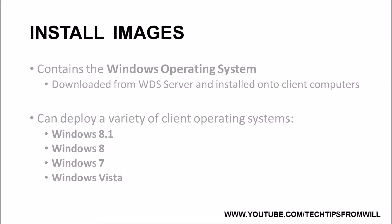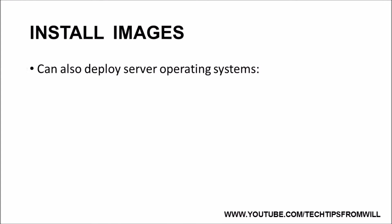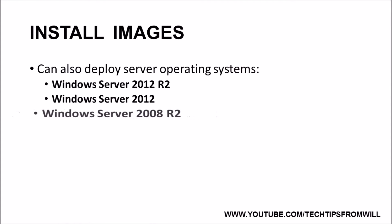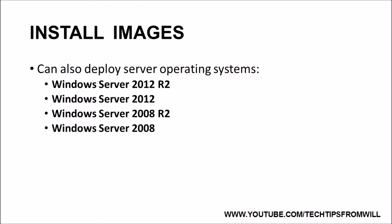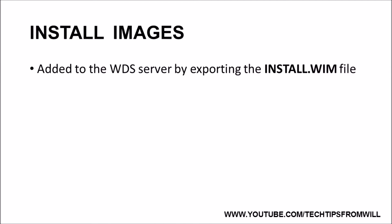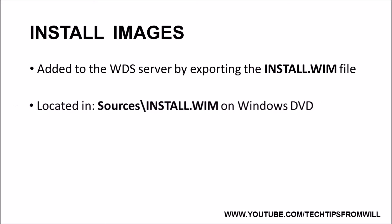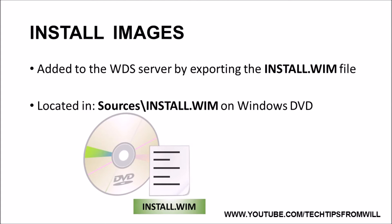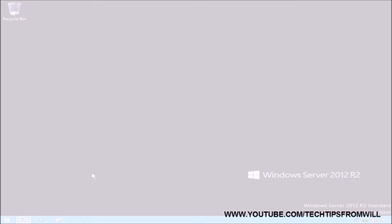You can also use Windows Deployment Services to deploy server operating systems, such as Windows Server 2012 R2, Windows Server 2012, Windows Server 2008 R2, and Windows Server 2008. Install images can be added to the WDS server by exporting the install.wim file, which contains the Windows operating system. The install.wim file can be found in the sources directory of the Windows DVD. I will now change to my Windows Server 2012 R2 server with Windows Deployment Services installed to demonstrate how this is done.